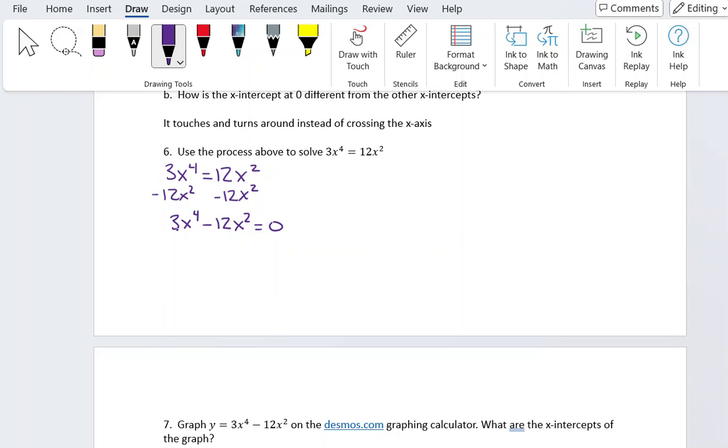Now I'm going to factor this. So start by looking at the numbers 3 and 12. I can take out a 3, and then I can also take out 2 x's, so that's x squared. Then what do I have left? I have x squared left from the first term and minus 4 from the second term.